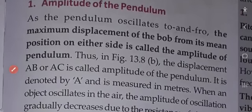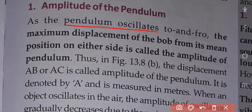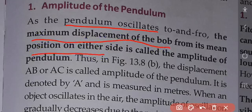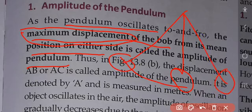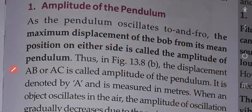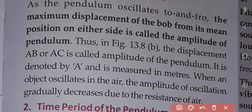The amplitude of the pendulum: as the pendulum oscillates to and fro, the maximum displacement of the bob from its mean position on either side is called the amplitude of the pendulum. In figure 13.8, the displacement AB or AC is called the amplitude. It is denoted by A and is measured in meters.